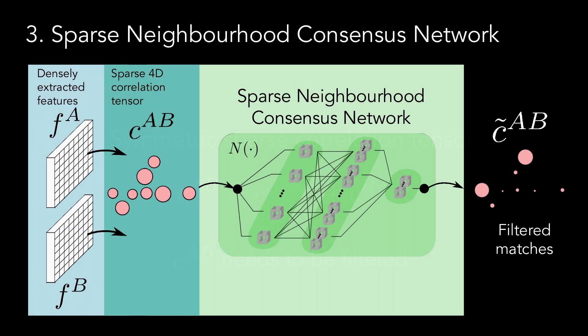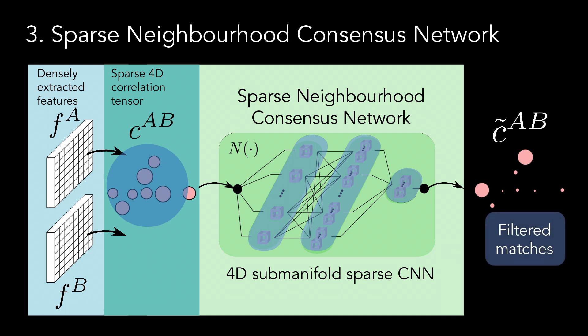In order to filter the tentative matches, we propose the sparse neighborhood consensus network that leverages 4D submanifold sparse convolutions, in order to process the sparse correlation tensor in a computationally efficient manner. With each additional layer of this CNN, the receptive field in the 4D space of matches increases, being able to capture larger and more complex patterns of correspondence. The network then produces filtered matching scores that are used to obtain the final correspondences.